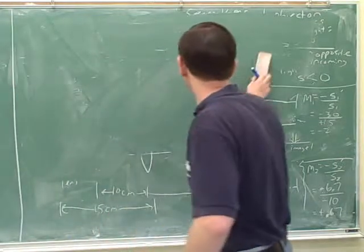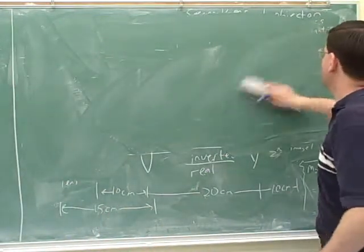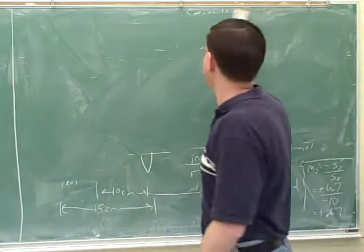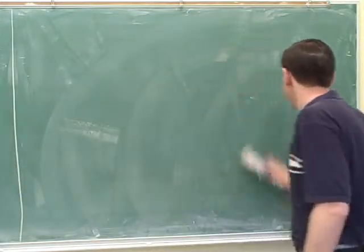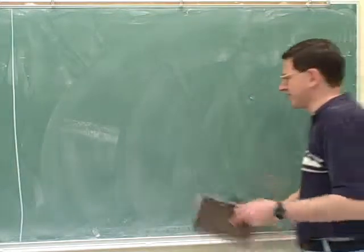One more thing on that problem we just did. If it's multiple lenses, you'll have to use the lens mirror equation twice. It's very important to label when you're working with the first lens and when you're working with the second lens, because all the variables for the first lens are different than the variables for the second lens.